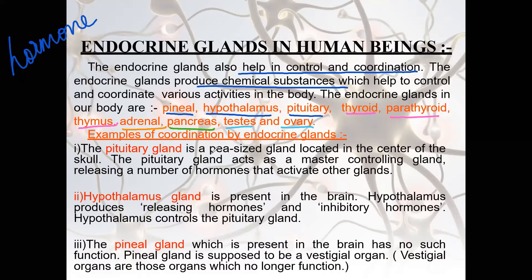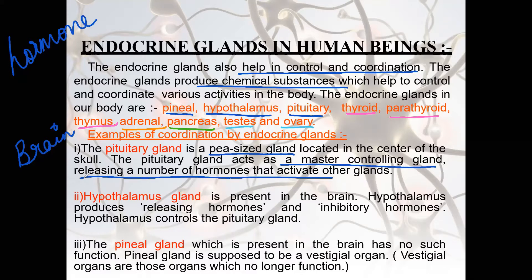Pituitary is a pea-sized gland located in the skull, that is, in the brain. The pituitary is known as the master controlling gland — it releases a number of hormones that activate other glands. That is why pituitary is known as the master controlling gland.